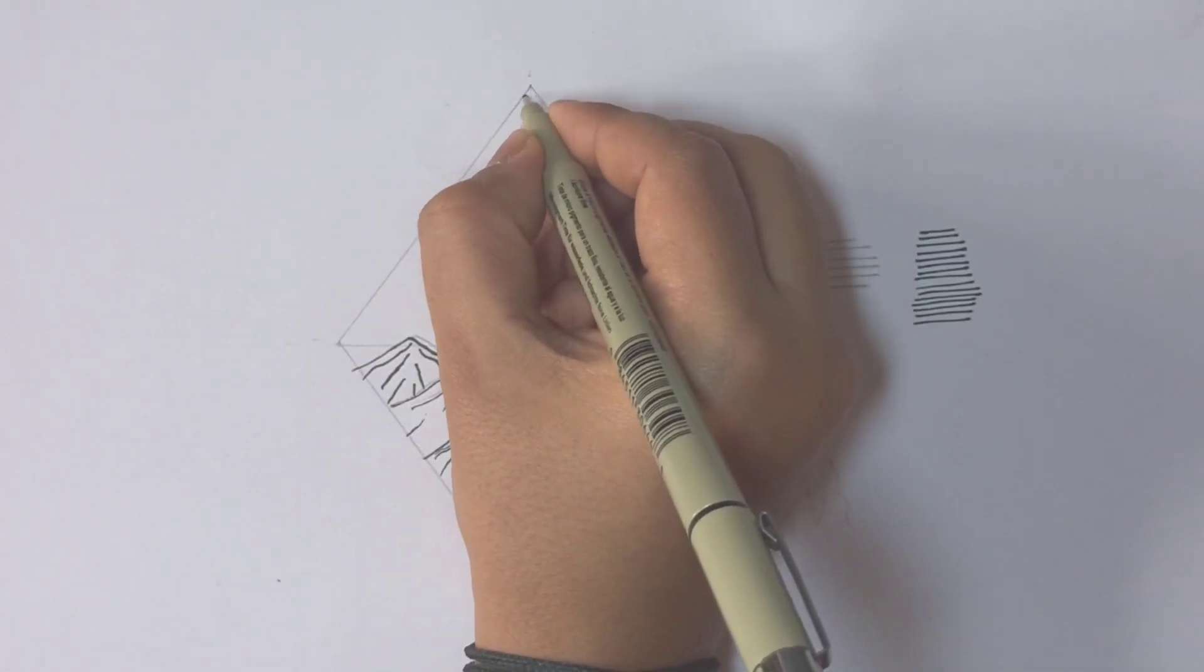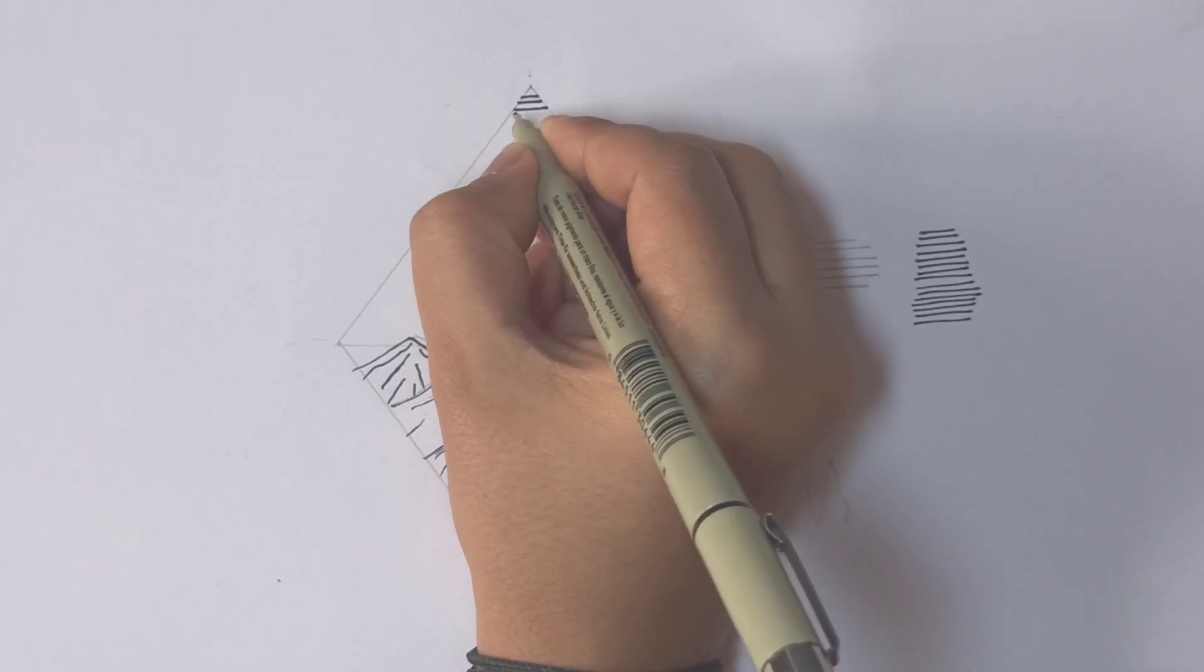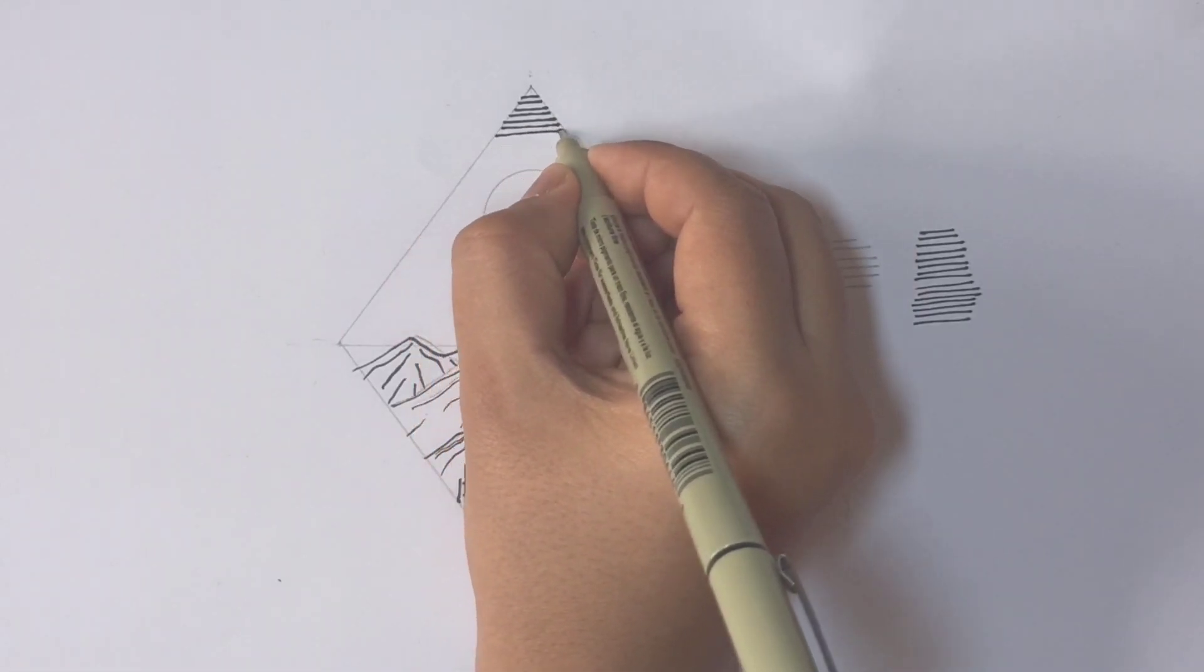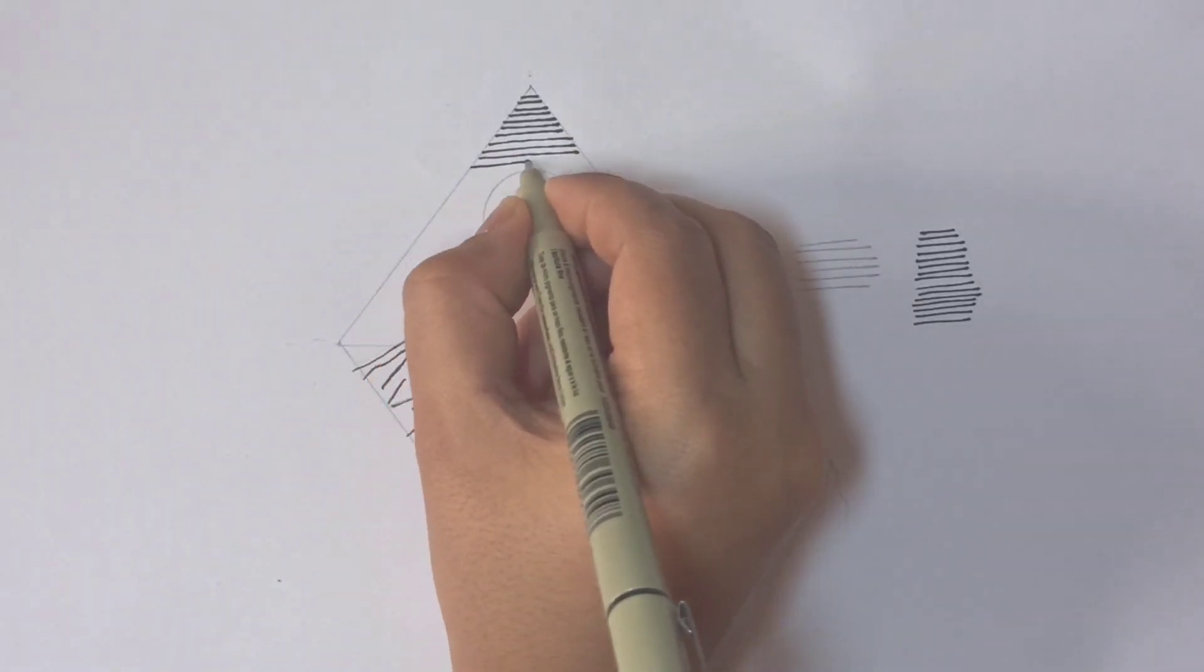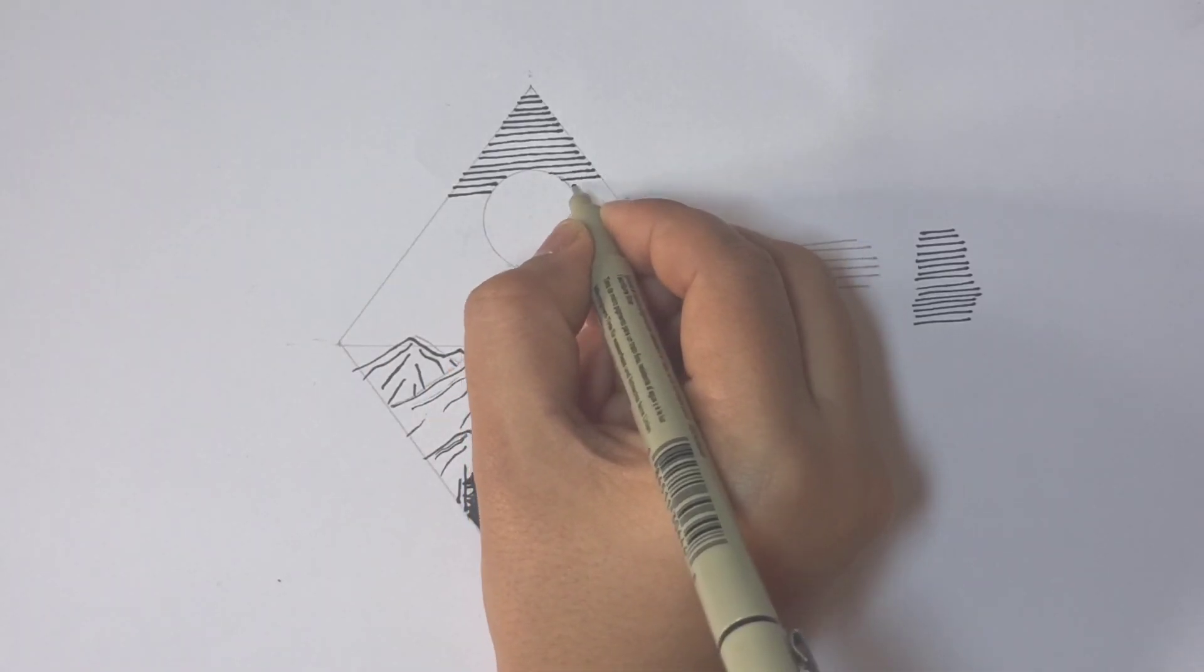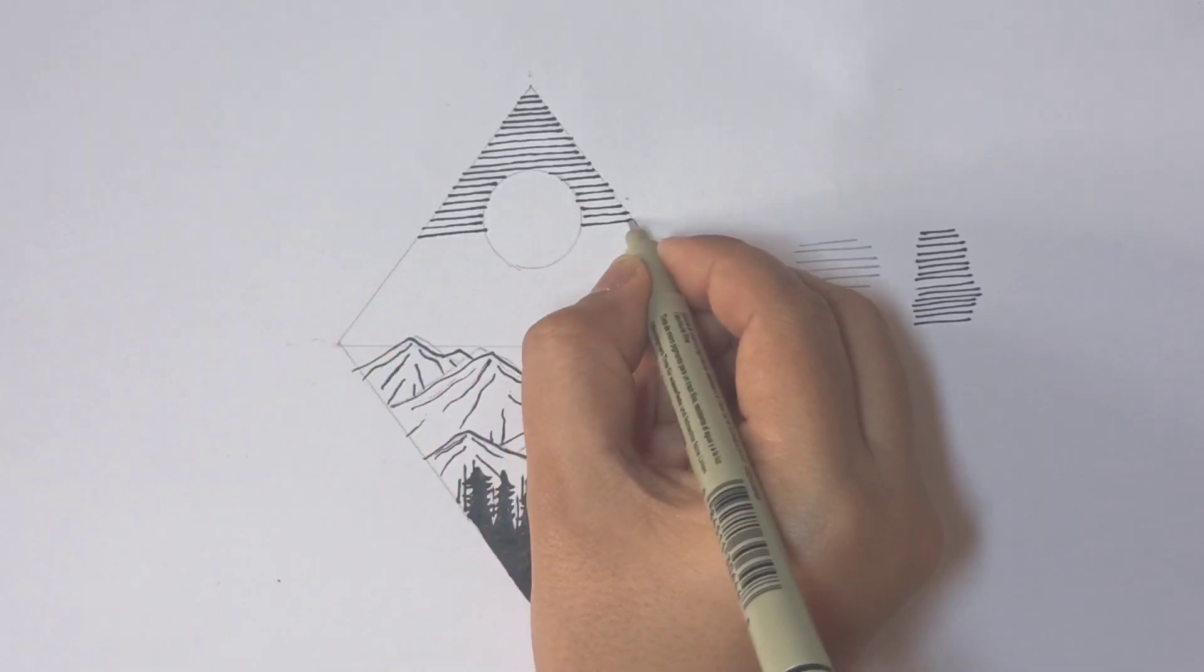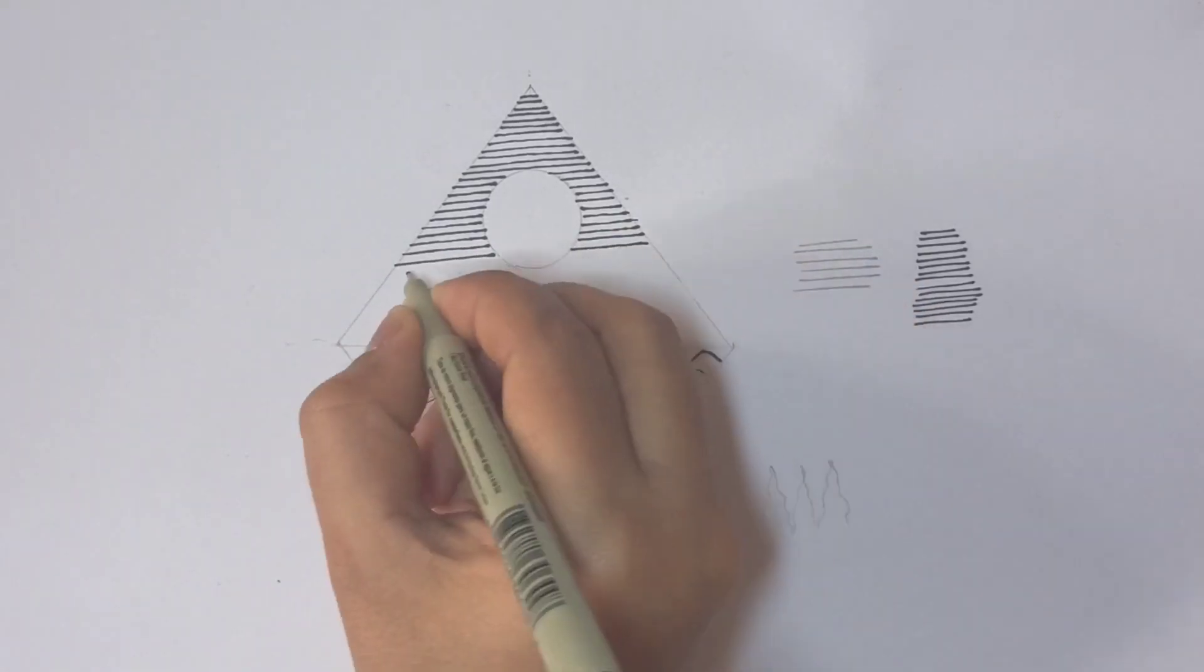Here we are going negative. That means we are covering the sky area with hatching and not the sun. Try to do lines as close as possible.